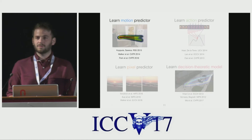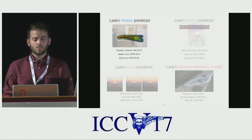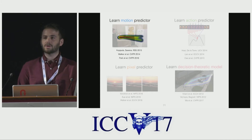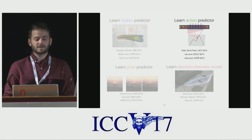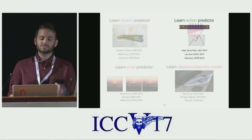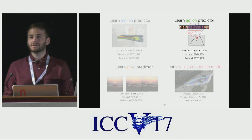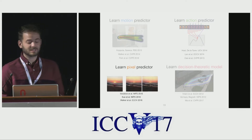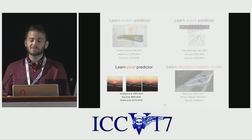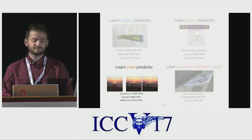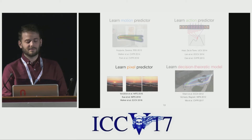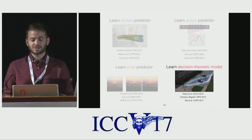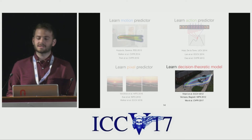There are a few veins of related work. One approach is to predict the future motion of a person or object. Another method attempts to predict the next short-term action that will occur. Another approach is to predict pixel appearance or motion in future frames. Finally, decision-theoretic approaches have been used to predict the motion of agents in a scene.